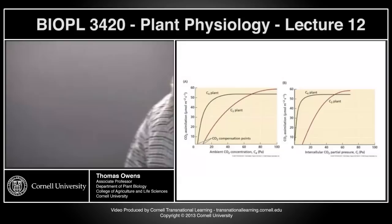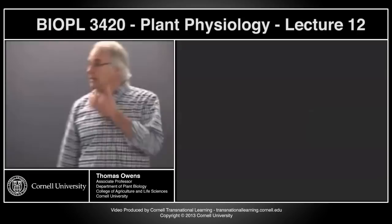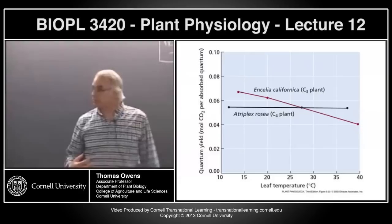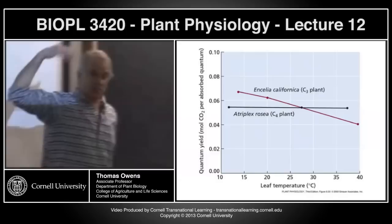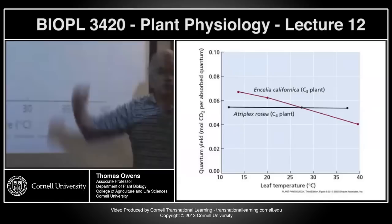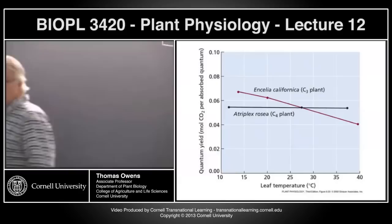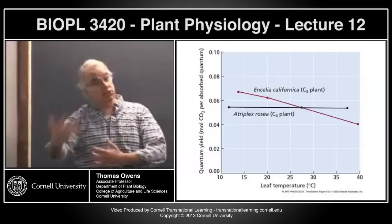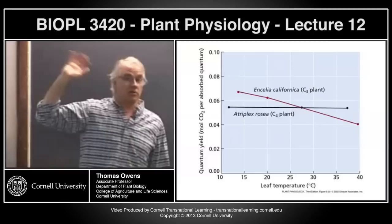Here's another way to look at this problem. This graph shows the quantum yield of photosynthesis — how many oxygens are evolved per photon absorbed — comparing this over a temperature range for both C4 plants and C3 plants. For C4 plants, that curve is flat. The efficiency in terms of CO2 fixed per photon absorbed doesn't change with CO2 concentration because the physiology of C4 photosynthesis doesn't change with CO2 concentration.